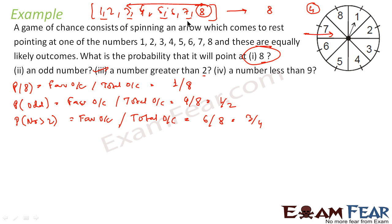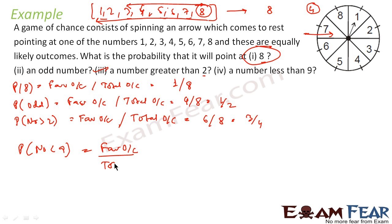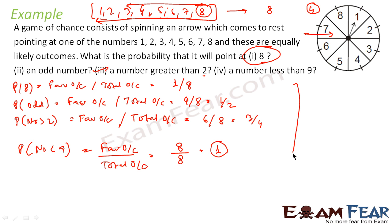Number less than 9 — if you see, all the numbers are less than 9. Using the same formula, favorable outcome by total outcome: favorable outcome is 8 because all 8 numbers are less than 9, and total outcome is also 8. That becomes 1 — it's a sure shot event that the number will be less than 9.